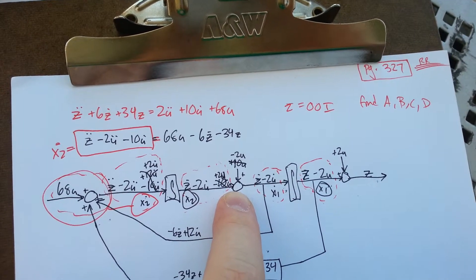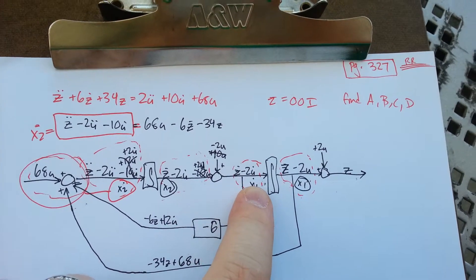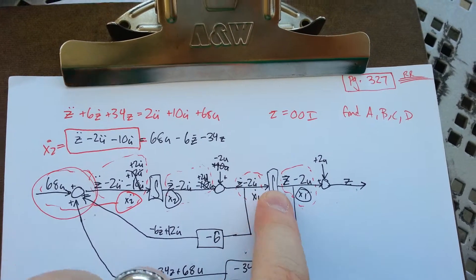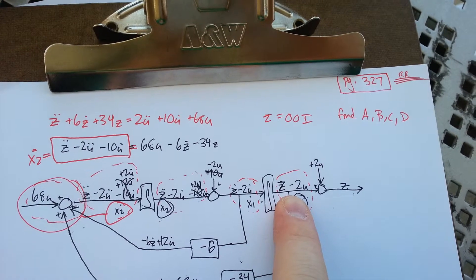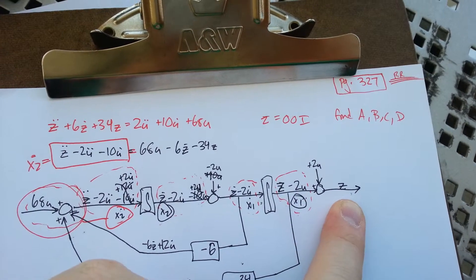That leaves you with z dot minus 2u dot, which you put through an integral again and that leaves you with z minus 2u. Again add a summer to eliminate the u and you're left with z.